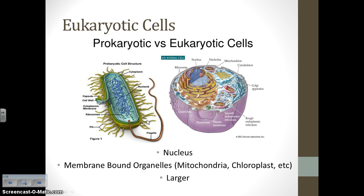We're first going to start with a quick review of prokaryotic versus eukaryotic cells. We've talked about this many times this year. Eukaryotic cells — these are the kingdoms we're talking about. The major characteristics are the presence of a nucleus and membrane-bound organelles, those more complex organelles like the mitochondria, the chloroplasts, the lysosomes, and the Golgi body.